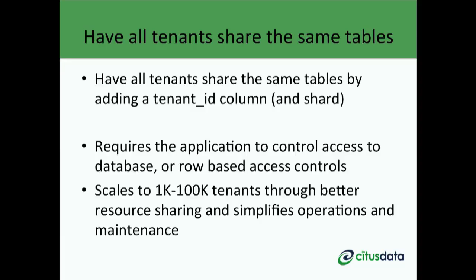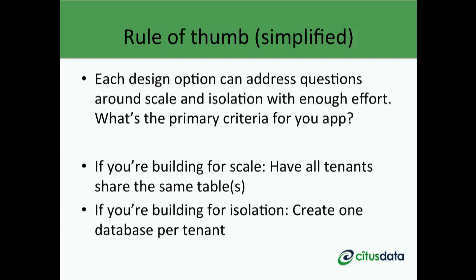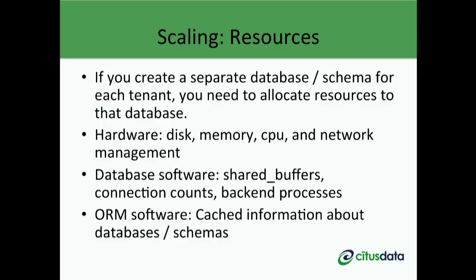So how do you pick between these three design patterns? Each option, with enough effort, can address questions around scale and isolation. The decision depends on the primary dimension you're optimizing for. A simplified rule of thumb: if you're building for scale, have all tenants share the same tables. If you're building for isolation, create a separate database for each tenant.